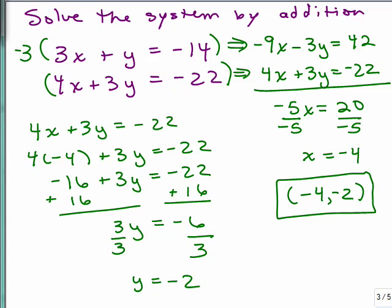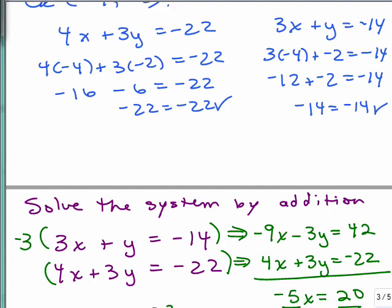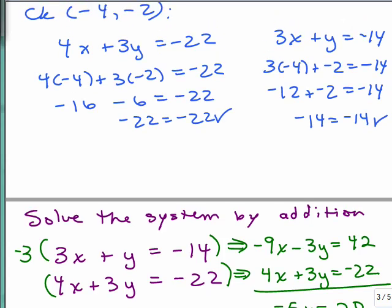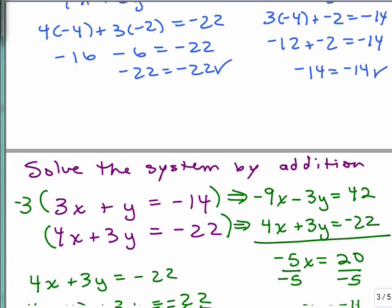So the value of y is also negative 2, so we get the same answer. Now you would still check that negative 4, negative 2 is a solution to the first equation, the first original equation 3x plus y equals negative 14, and 4x plus 3y equals negative 22. We did that previously when we did it by substitution. So here's the check into both of the original equations so that we know negative 4, negative 2 really is the correct solution.